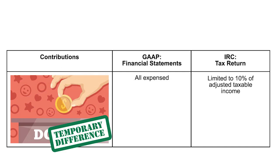Charitable contributions: the entire amount you've given away is an expense on the financials. On the tax return, it's limited to 10% of taxable income — that's income minus all expenses excluding the charity and excluding a dividends received deduction — and then you calculate 10%. If you have more than 10%, you have a carryover, and you're subject to limitations in subsequent years. You may not lose it; you're just not allowed to use it in the current year.